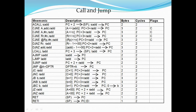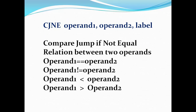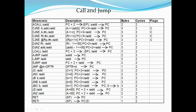DJNZ stands for decrement jump not equal to zero. You get only one operand for DJNZ, followed by a label. Whenever you want to perform any operation a limited number of times, you can use the DJNZ instruction. It decrements the operand value by 1; if it is not equal to 0, it goes back to the label. Once the operand value becomes 0, execution goes to the next line after DJNZ. Both CJNE and DJNZ come under conditional jump instructions.